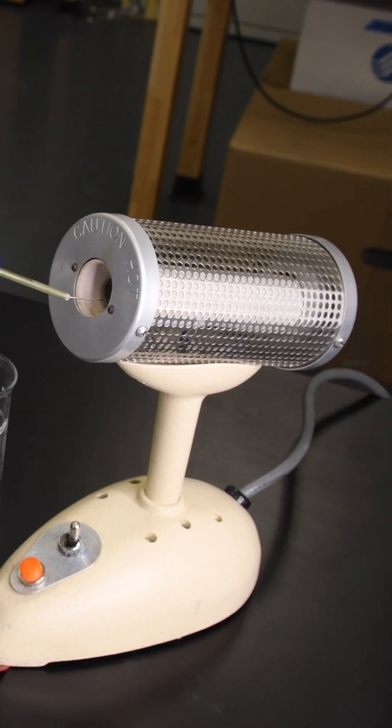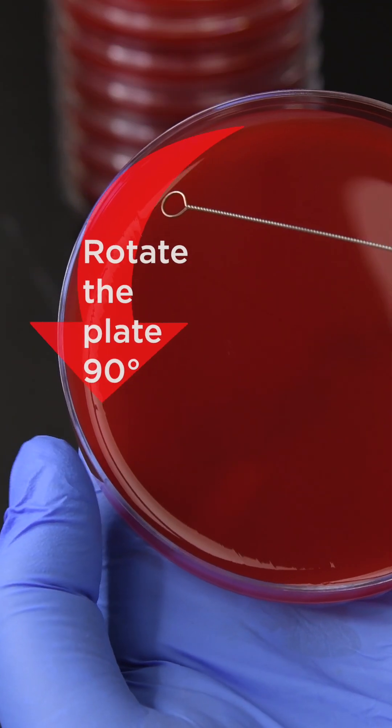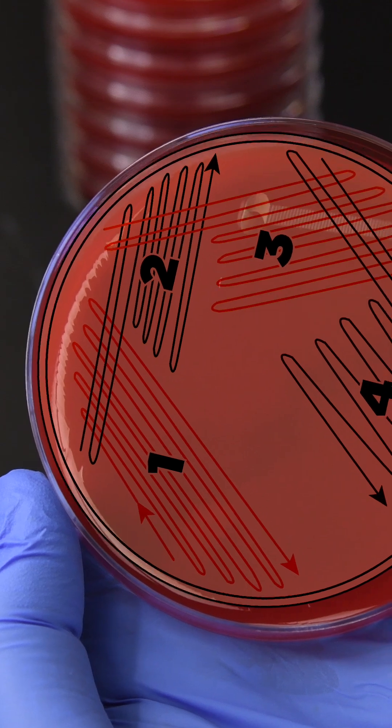Re-sterilize the loop and remember to let the loop cool before continuing to the next quadrant. Rotate the plate 90 degrees and then proceed to streak the remainder throughout quadrant two.